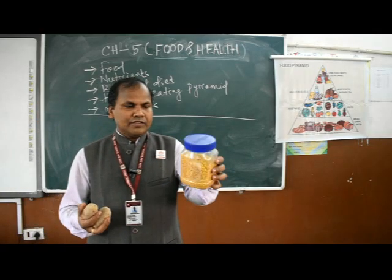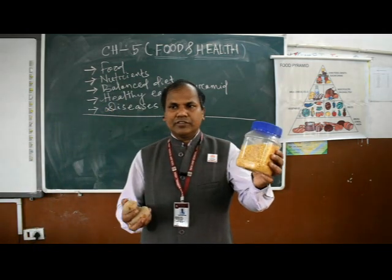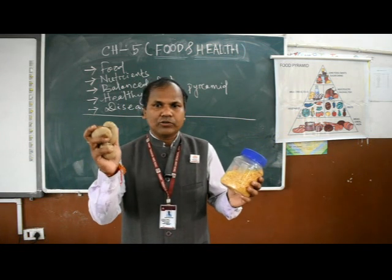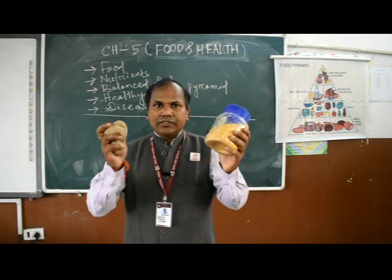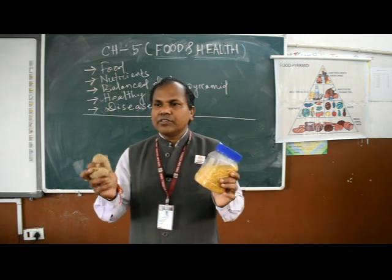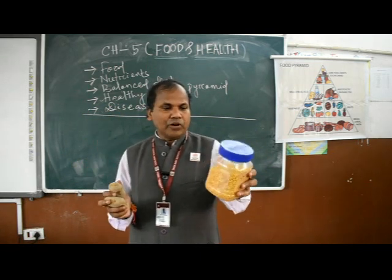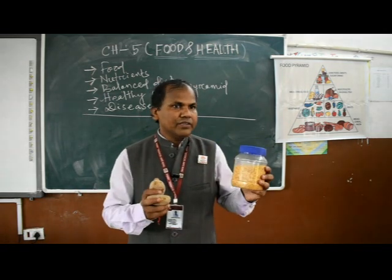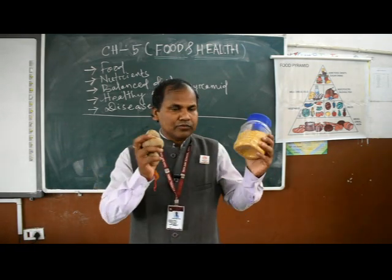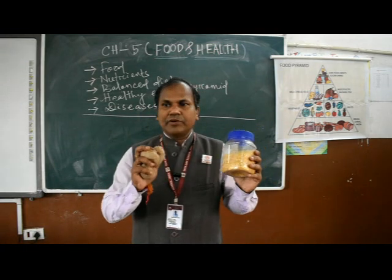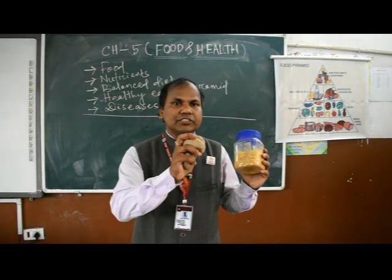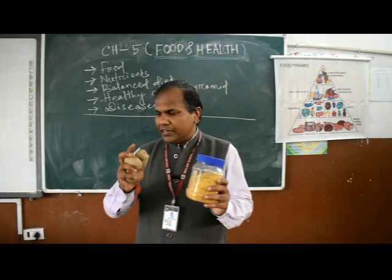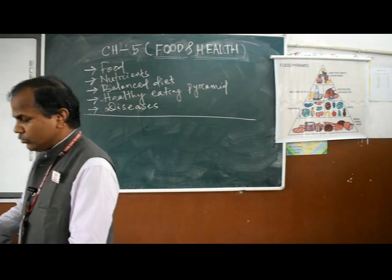Sources of protein include pulses and all types of dal. Sources of carbohydrates include potato, rice, wheat, and sugar cane. If a child is taking all types of dal and these carbohydrate-rich foods regularly, then this deficiency disease of carbohydrate and protein will not happen to that child.